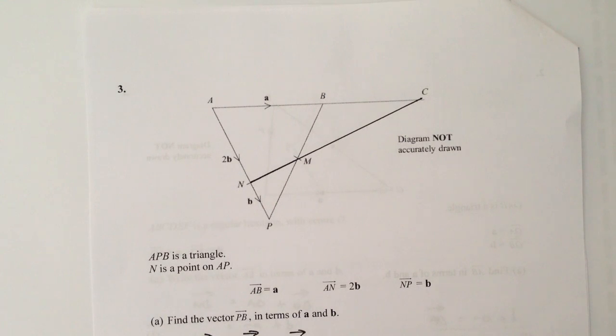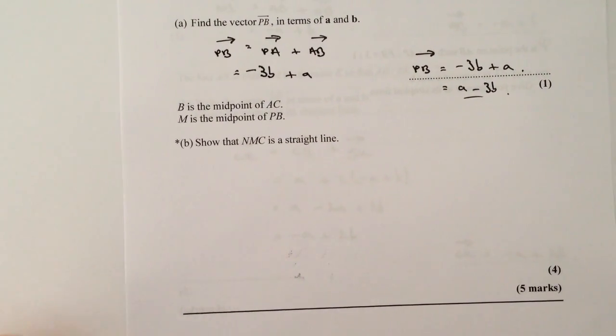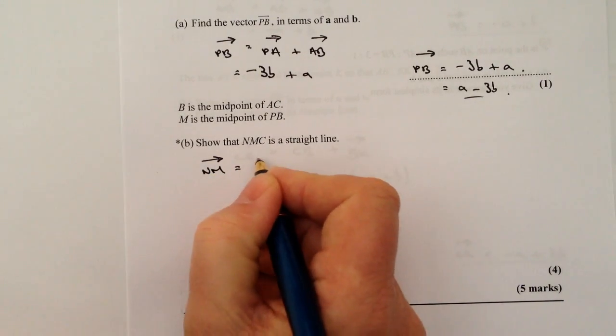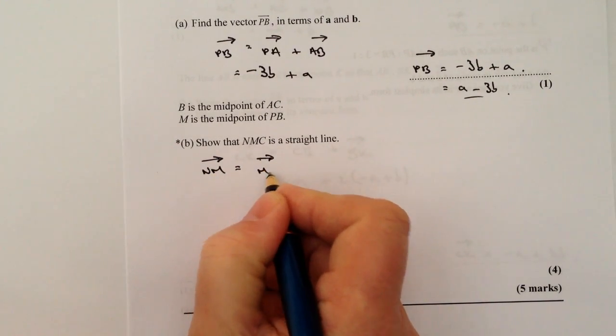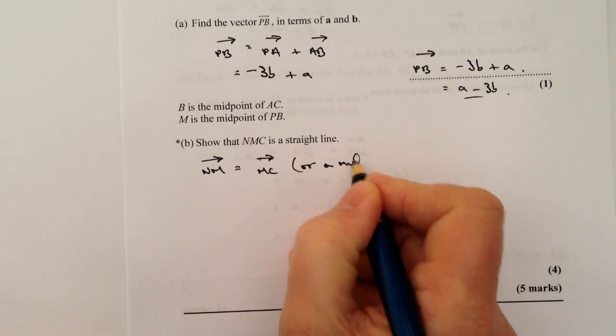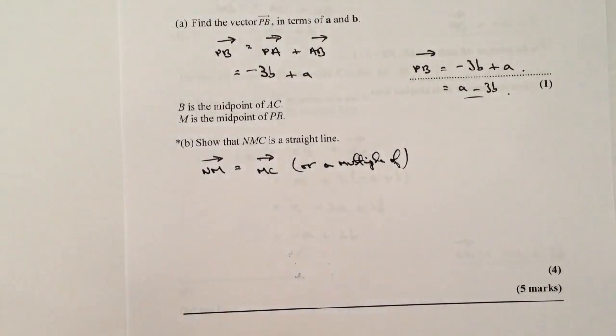So we want vector NM and vector MC to be either the same or a multiple of. So the first thing is we need to find vector NM and vector MC and make sure that they are similar to each other. So what I'm suggesting is that we've got vector NM equals vector MC, or a multiple of.